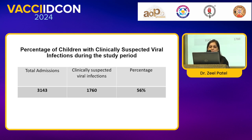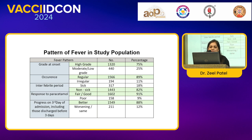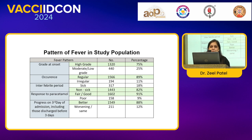Of the children who were admitted, the group classified as clinically suspected viral infections was 56%. The pattern of fever seen was high-grade fever at onset, regular in occurrence, non-sick child in the interfebrile period, with a fair or good response to paracetamol, and progress on day 3 of admission was better.